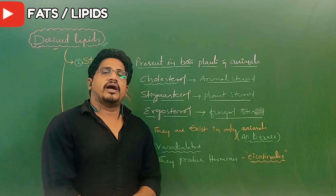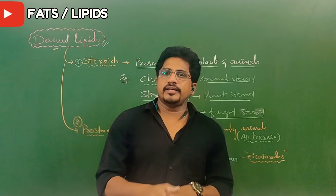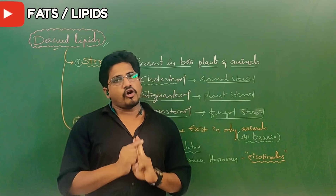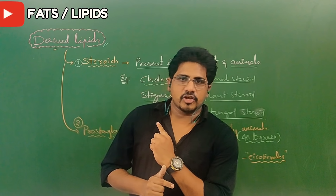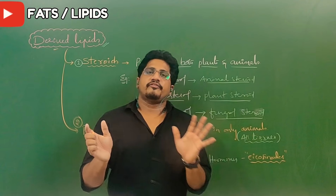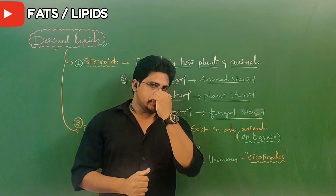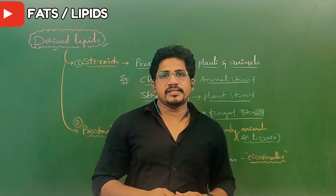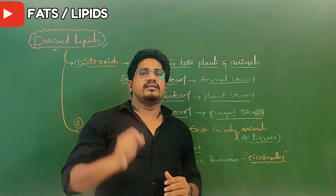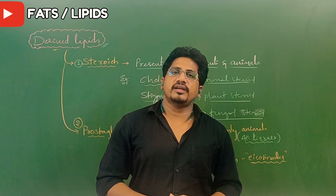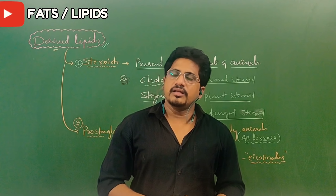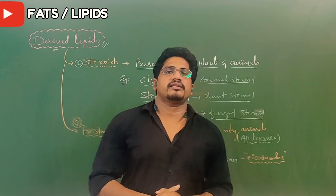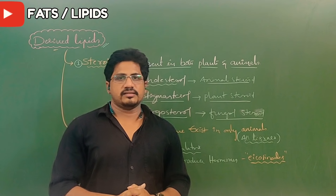So far you have learned about the different types of lipids, which come under three categories. Number one is simple fats or neutral fats. Number two is complex fats or compound fats. Number three is derived lipids or derived fats. Practice by making a flow chart, writing examples beside each type, and noting their importance and function. Repeat this a couple of times and you will learn it for the long term. I hope you understand the entire concept. Practice well and attend the assignment. In the next session I'll come with a different aspect. Thank you.